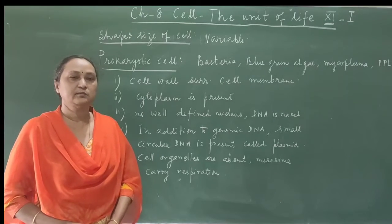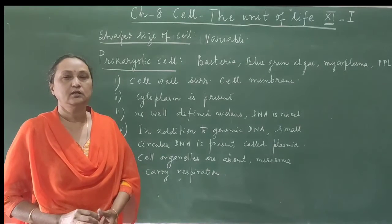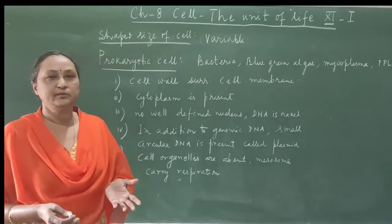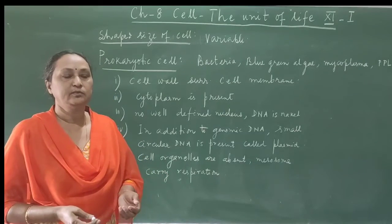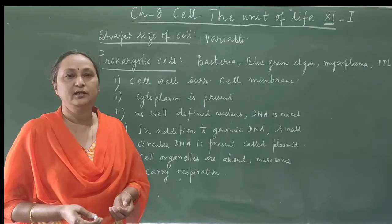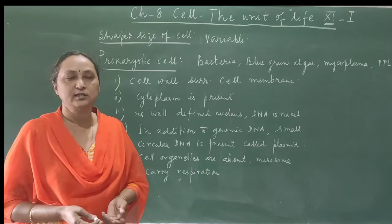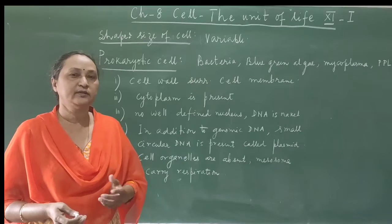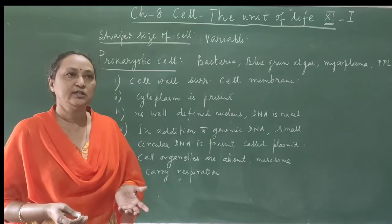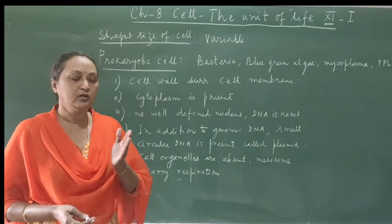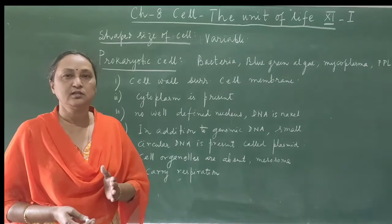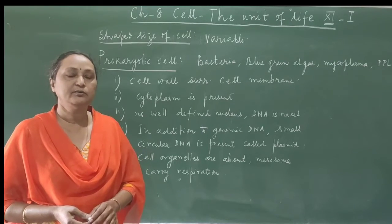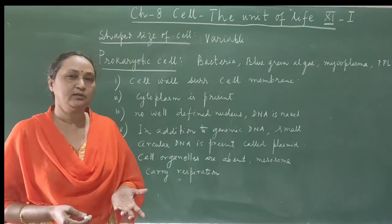When we discuss about the shape and size of the cell, that is variable. In different types of organisms the shape is also variable — in some organisms cells are small in size, in some they are bigger. Even within the same organism, in different parts of the body, the shape is variable, depending on the kind of role or function carried out by a particular cell. Similarly, size is also variable.